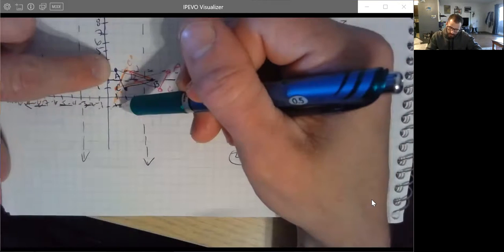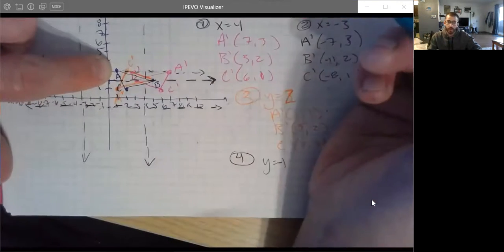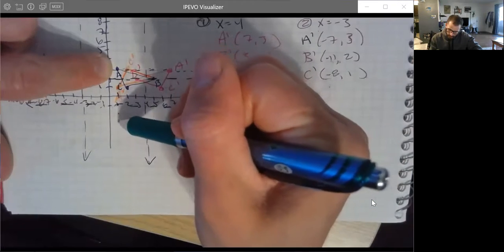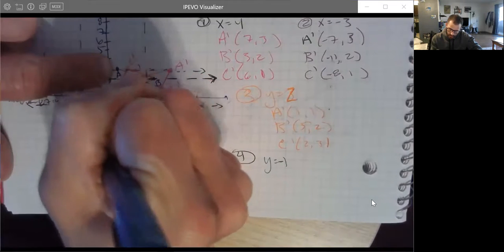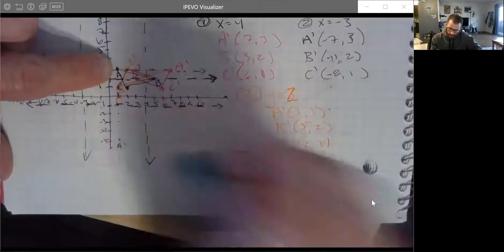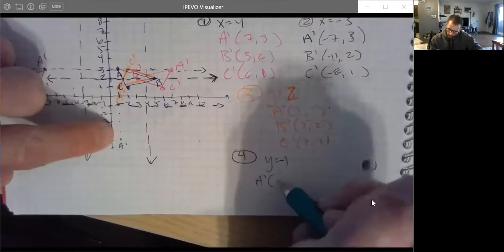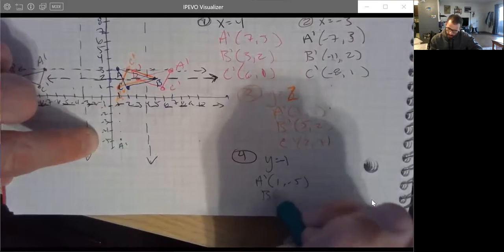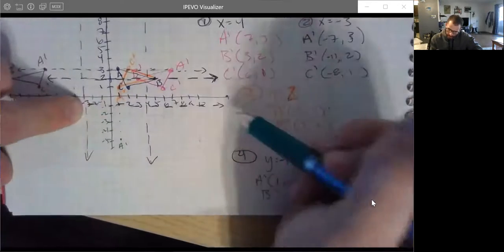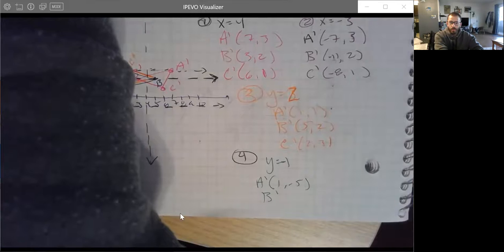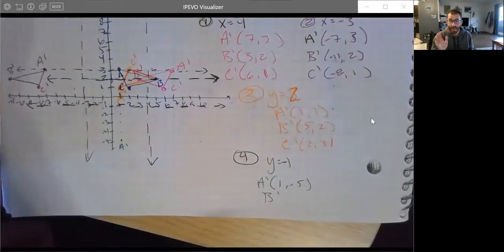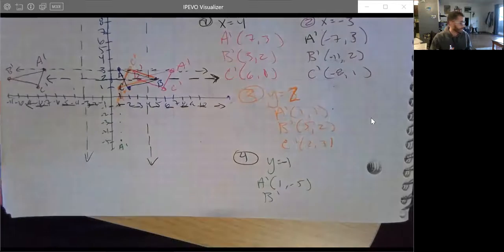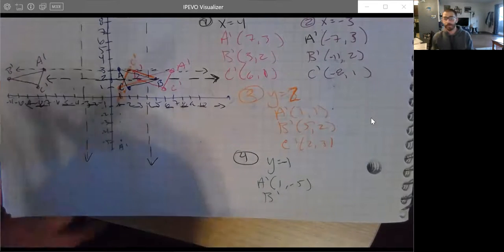So A is how many units above this line? One, two, three, four. So we got to do four units below this line. One, two, three, and four is A prime. Notice that the X's didn't change. Where is it? It looks like it's at one comma negative five. I'll pause while my dog goes crazy. Or not because I'm back. Was I gone? I don't know. Hopefully the dog doesn't interrupt us again. Apologize. Where were we?